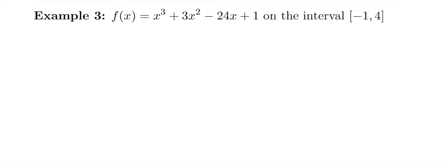We have x cubed plus 3x squared minus 24x plus 1 on the interval from negative 1 to 4, and we want to try to find the absolute maximum and the absolute minimum point.